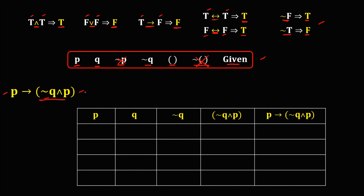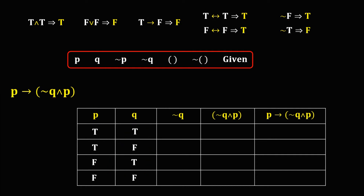To find the values for every column, for P and Q the values are permanent. For P that's true, true, false, and false. For Q that's true, false, true, and false. These values of P and Q are permanent.